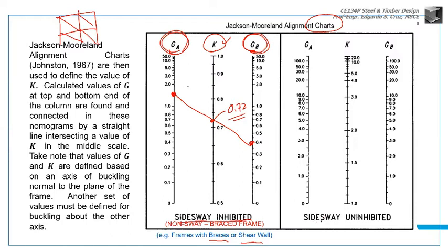The second chart is for sidesway uninhibited, meaning there is sidesway. Sway or unbraced frame. An example of this is moment resisting frames - MRF.